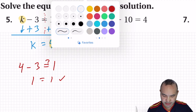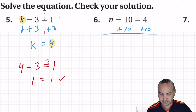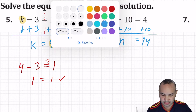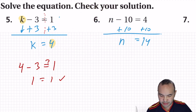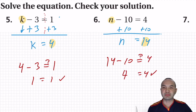Let's check out number 6. This is minus 10, so I'm going to do the opposite — add 10. Minus 10 plus 10 is 0. N drops down, equal sign goes right under it, and 4 plus 10 is 14. To check: instead of n, put 14. 14 minus 10 equals 4. Yes — my answer is correct.